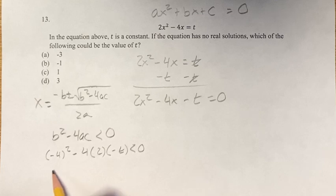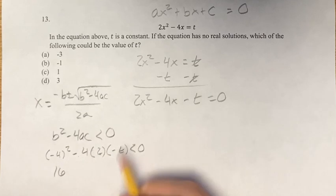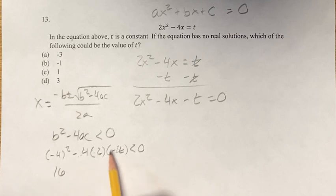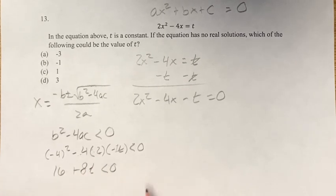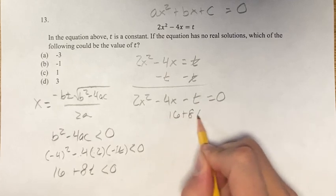so negative 4 squared is 16, and then we have negative 4 times 2 is negative 8, and then times negative 1, this is negative 1t. Negative 4 times 2 times negative 1 is plus 8t, and this is less than 0. 16 plus 8t is less than 0,